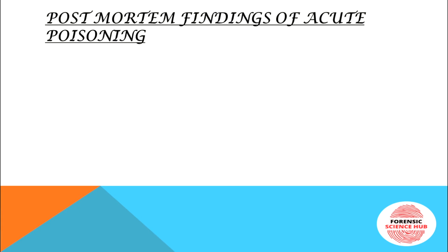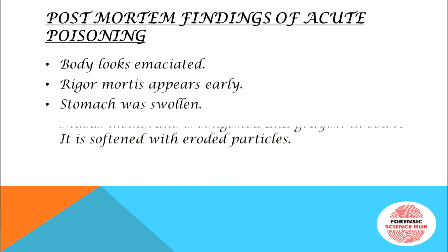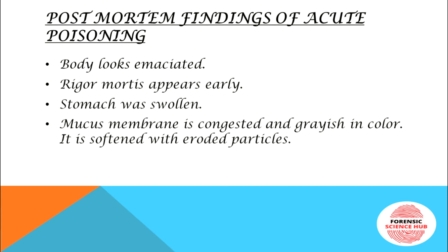Post-mortem findings of acute lead poisoning: the body looks emaciated, similar to arsenic and mercury poisoning. Rigor mortis appears early. The stomach can be swollen. The mucous membrane is congested, looks grey in colour, softened with eroded particles of lead.